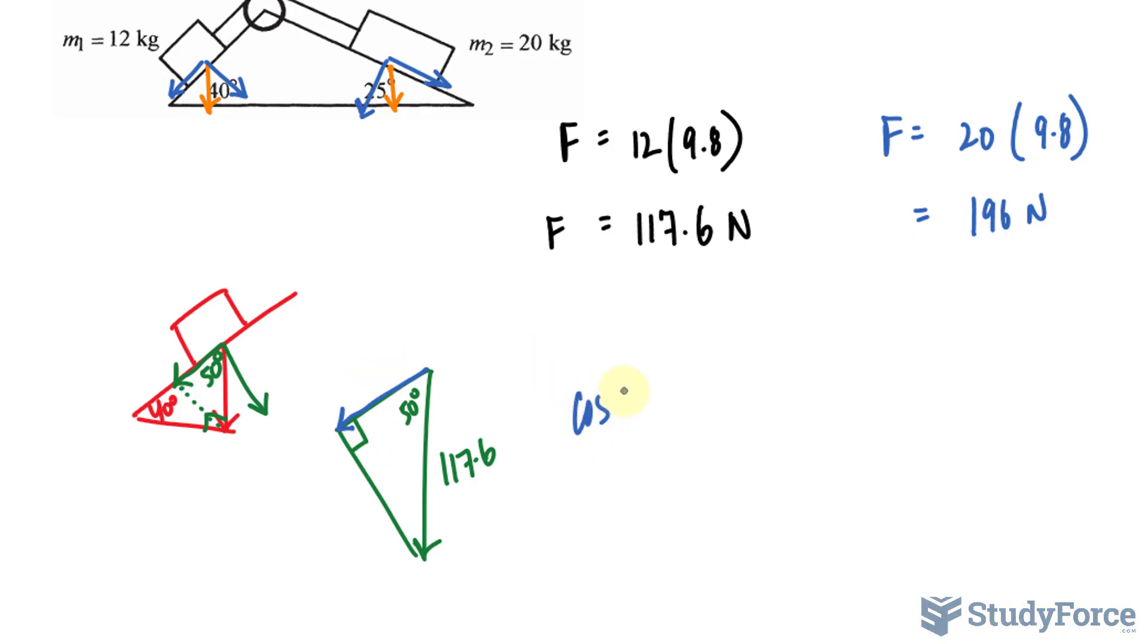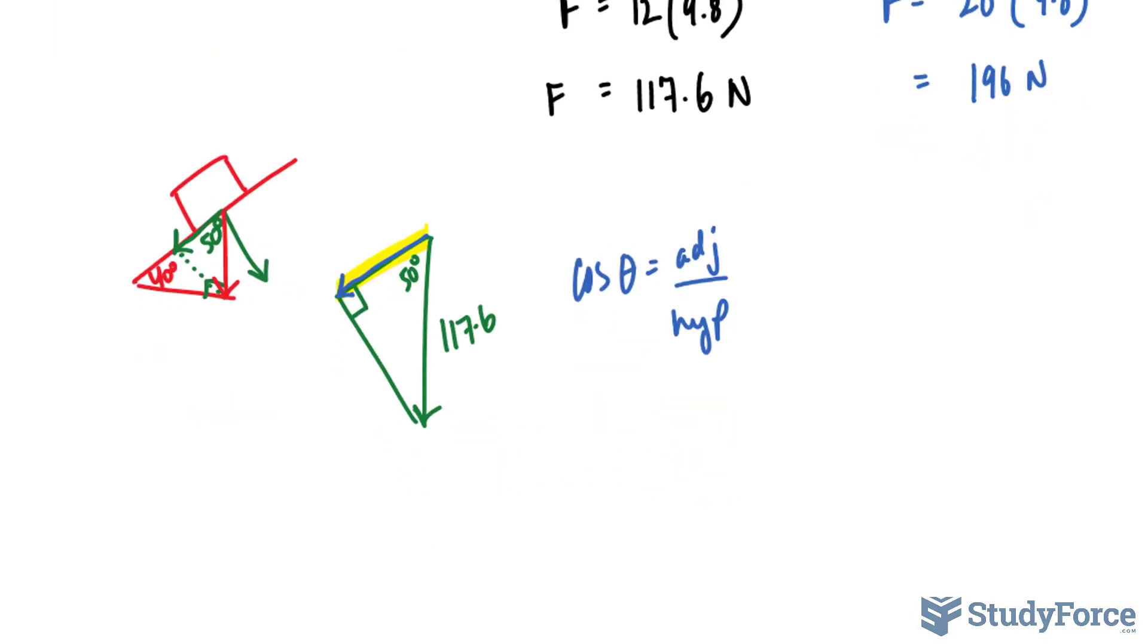So cosine theta is equal to the adjacent, this thing, over the hypotenuse, which we have as 117.6, and the angle is 50 degrees. So that's 50 degrees. And the hypotenuse is 117.6.